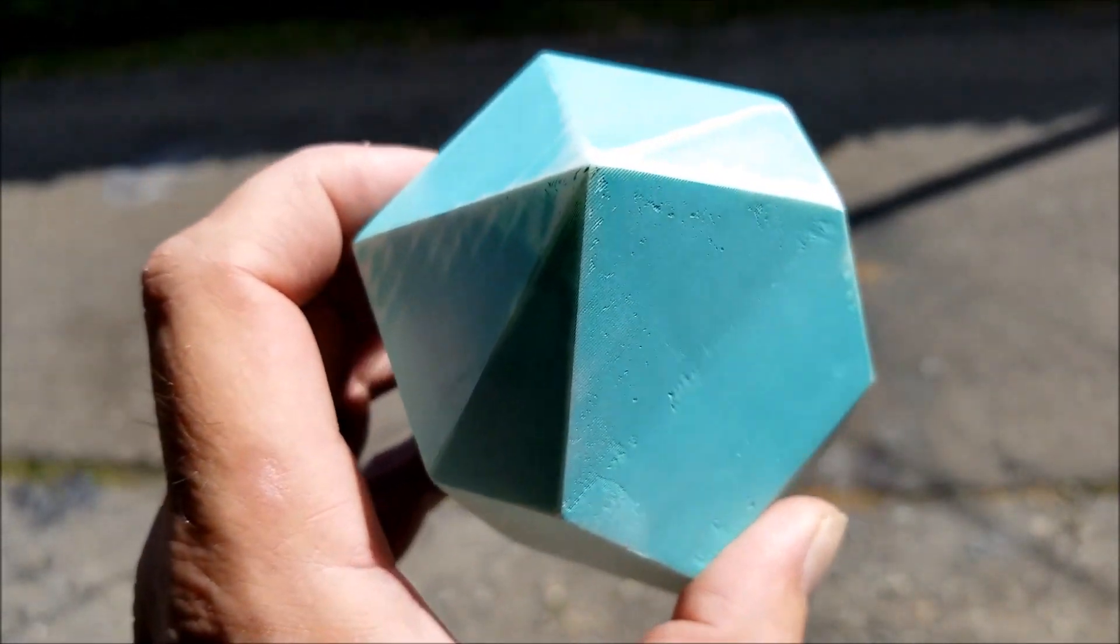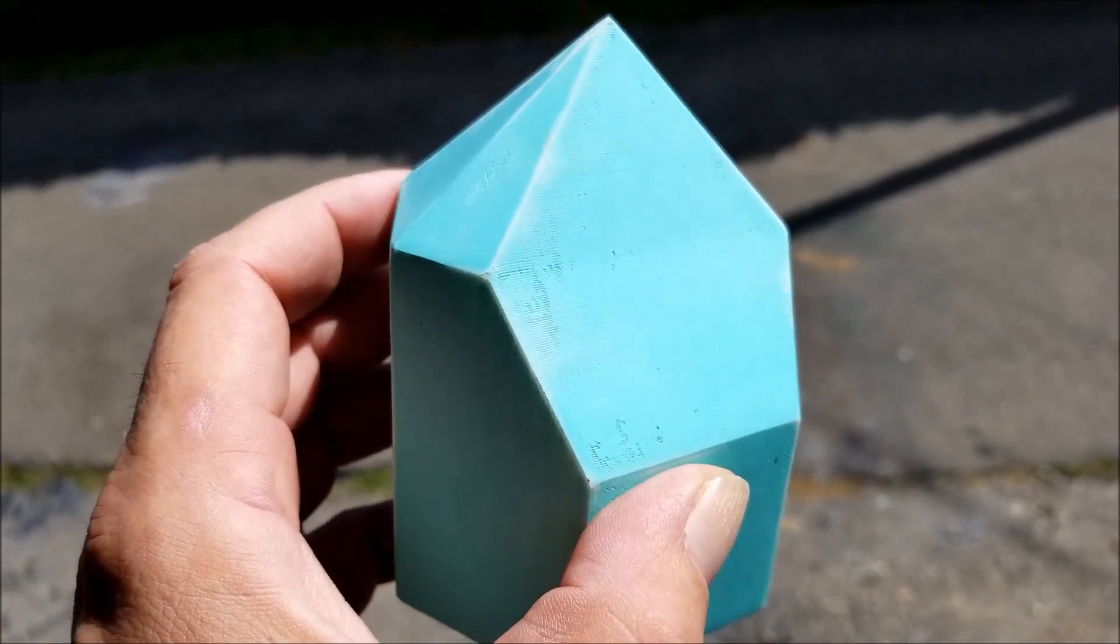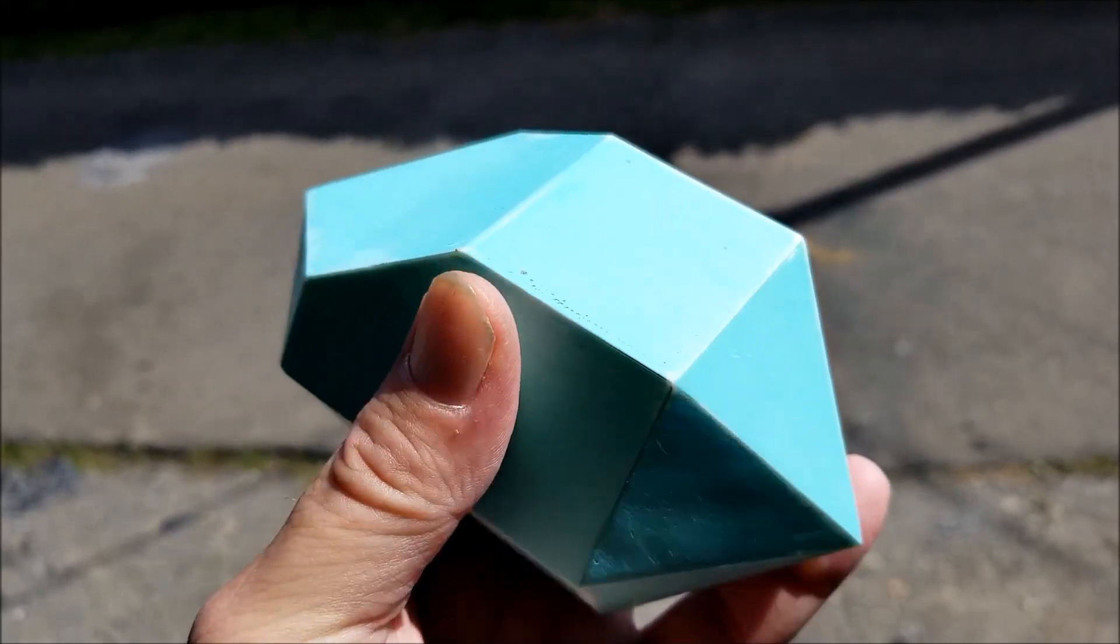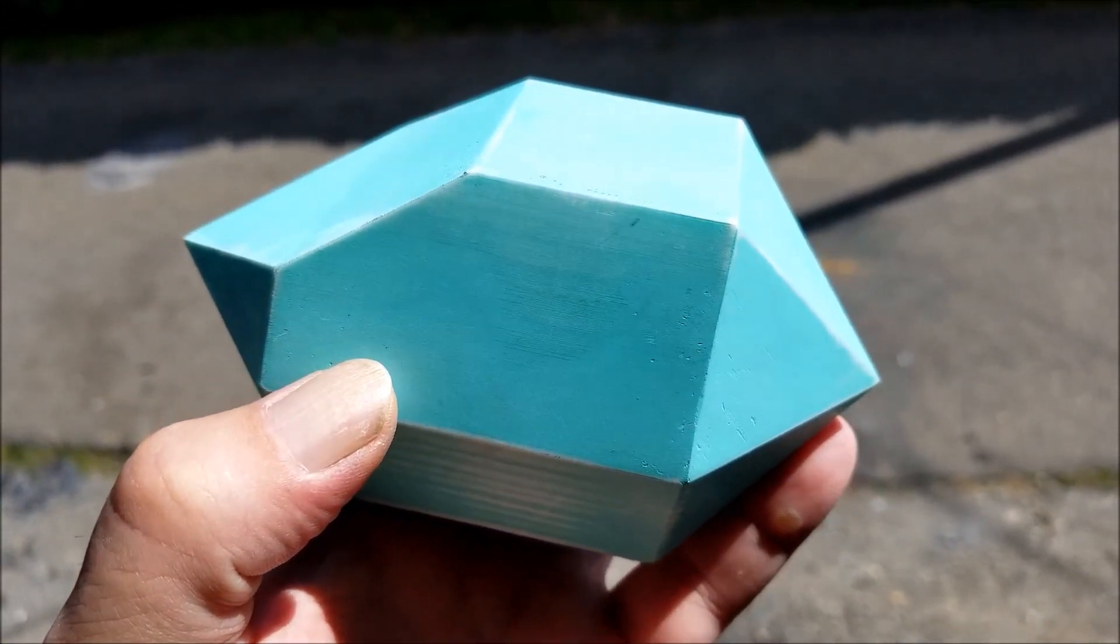So I can get an Organite mold out of it. I'm going to make a silicon Organite mold and do Organites in the shape of a Herkimer Diamond. I can't wait for that.